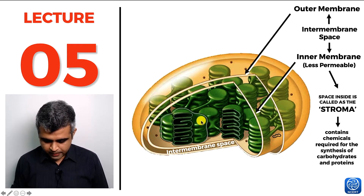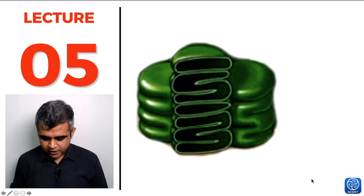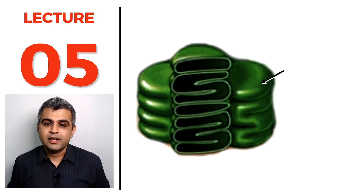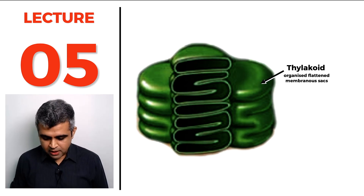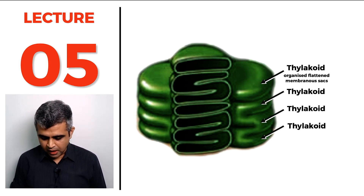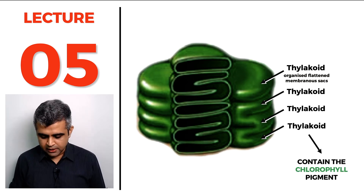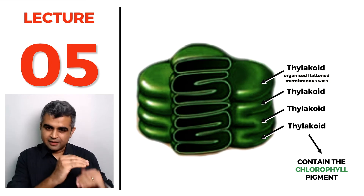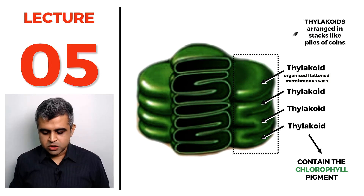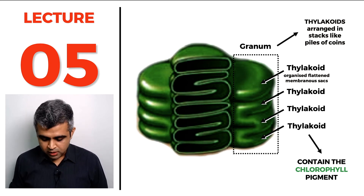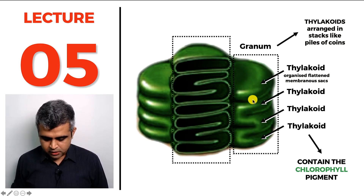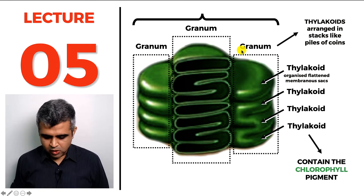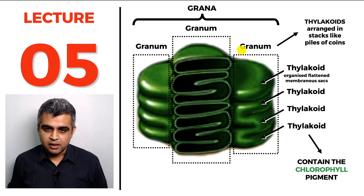Magnifying a part of the stroma, we see coin-like structures called thylakoids — thulacos meaning pouch. Thylakoids are organized flat membranous sacs that contain the chlorophyll pigment. When thylakoids are stacked one on top of the other, the stack is called a granum. Multiple grana are present inside the chloroplast — granum is singular, grana is plural.